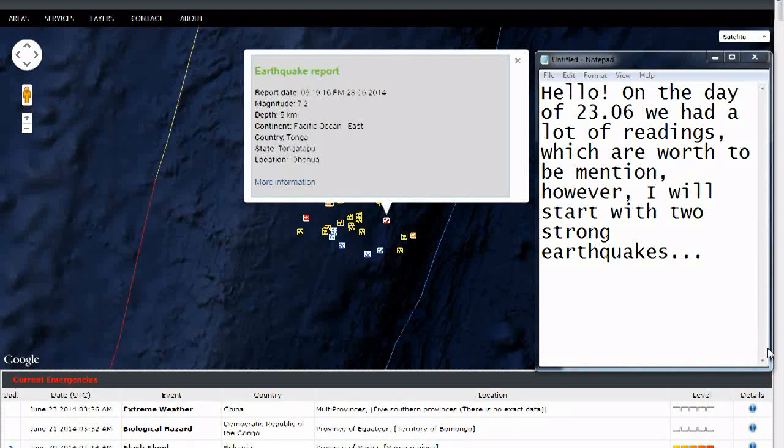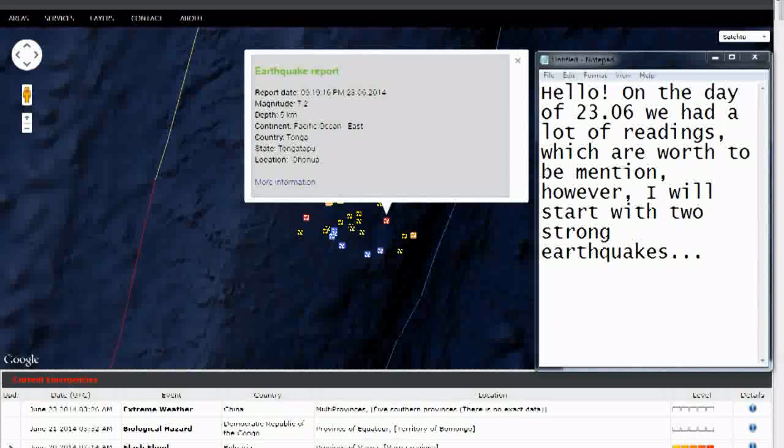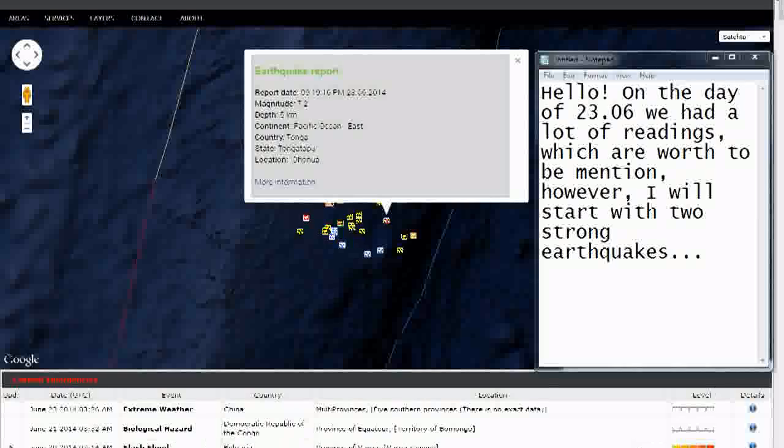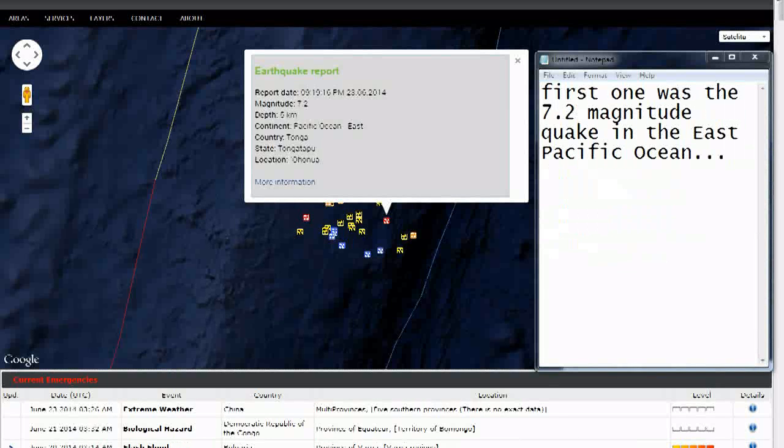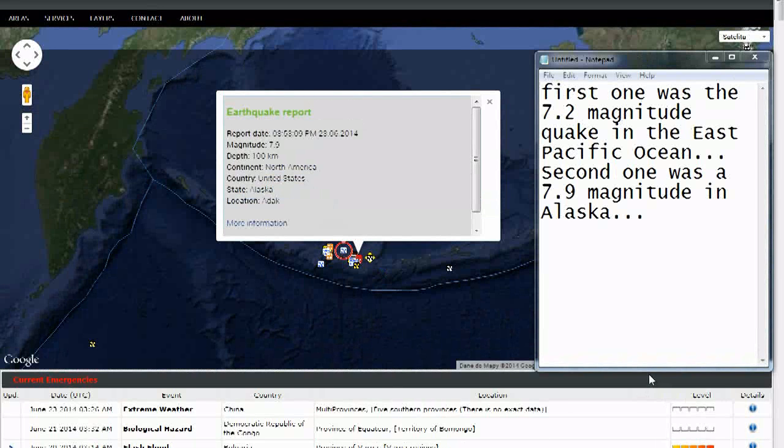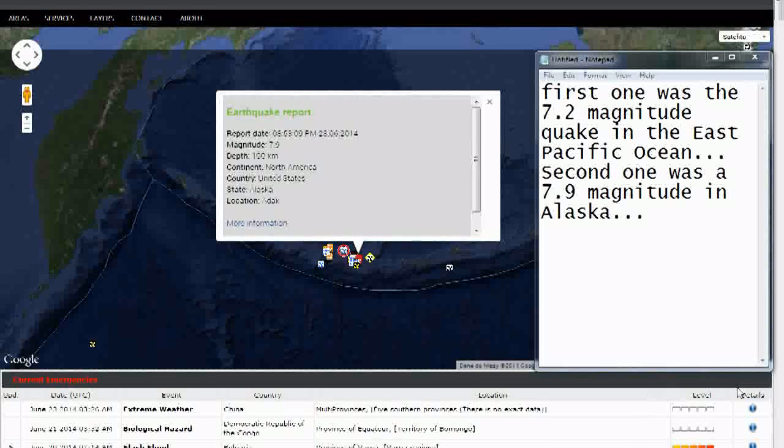Hello! On the day of 23rd of June we had a lot of readings which are worth to be mentioned. However, I will start with two strong earthquakes. First one was the 7.2 magnitude quake in the East Pacific Ocean. Second one was a 7.9 magnitude in Alaska.